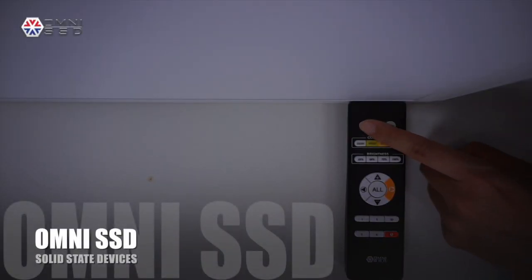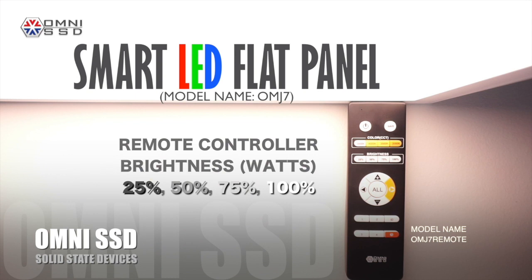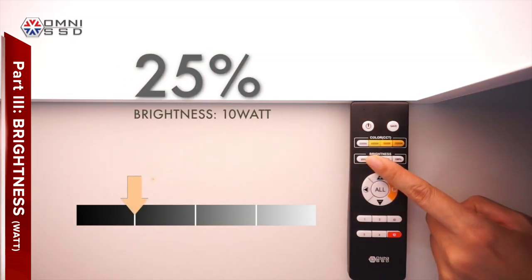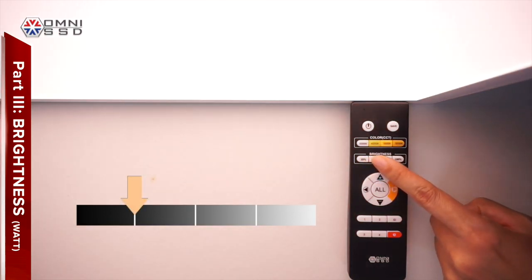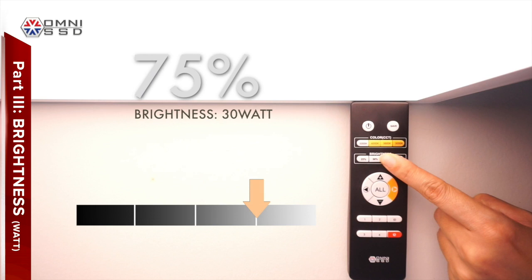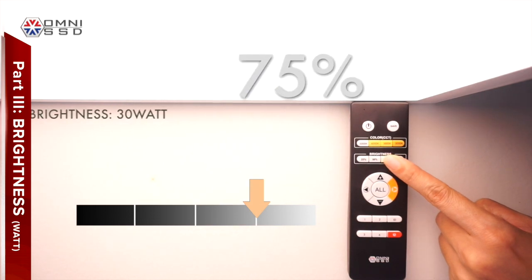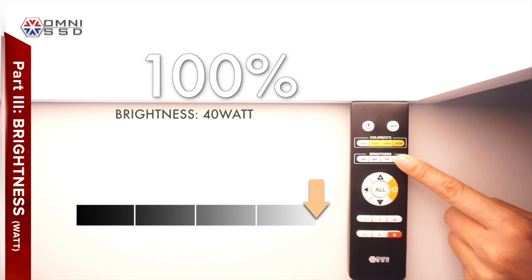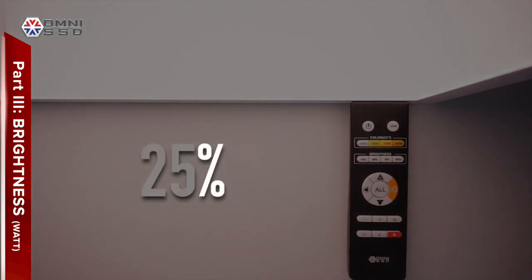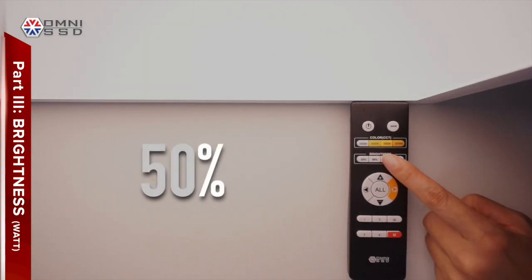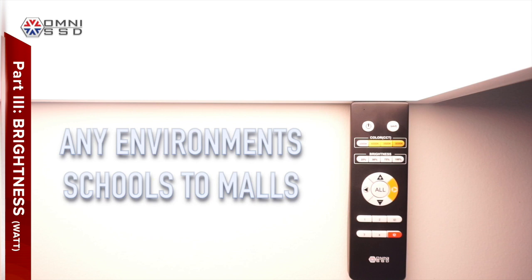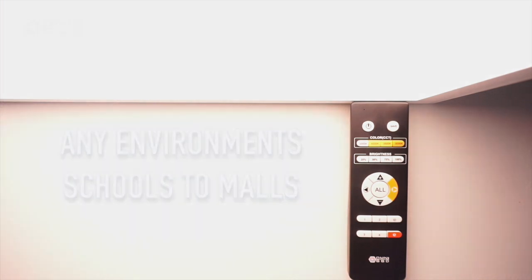The Omni SSD OMJ7 Smart LED Black Panel can be controlled with brightness and wattage. Controlling brightness is as simple as pushing a button: 25% brings you 10 watts of power, 50% brightness is 20 watts of power, 75% gives you 30 watts, and 100% is the full brightness of 40 watts. The flat panel can be utilized in any environment — schools, industrial, hospitals, and malls.